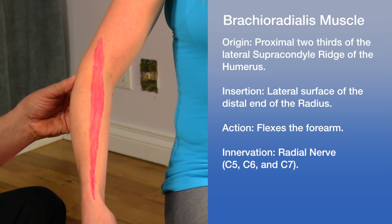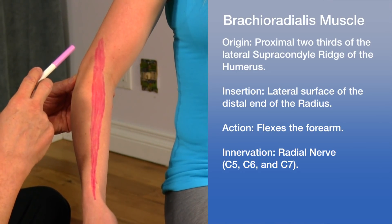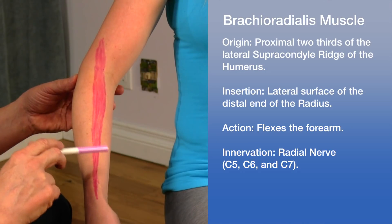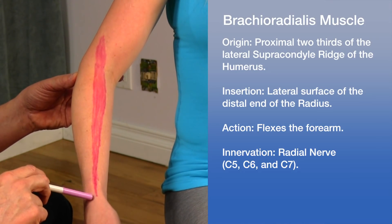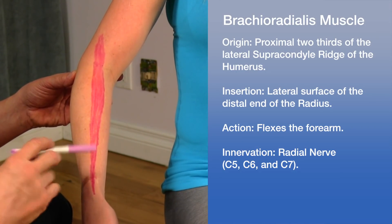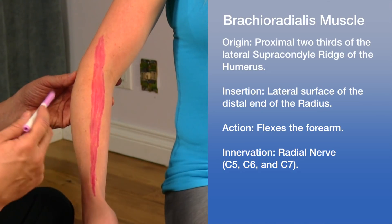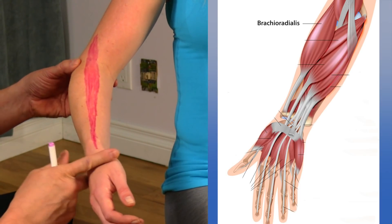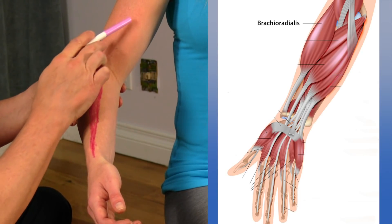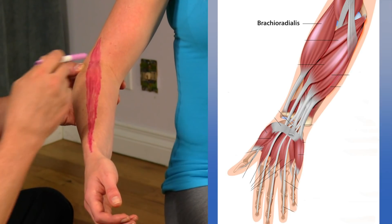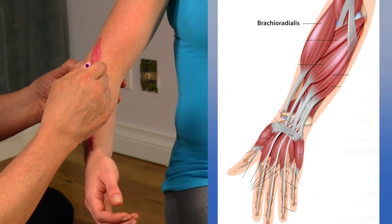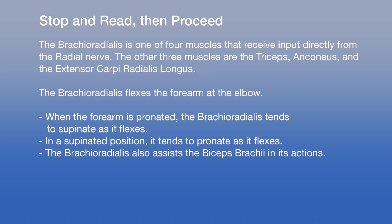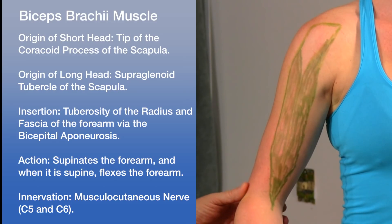The brachioradialis originates on the lateral ridge of the distal humerus and inserts via a long tendon at the base of the radial styloid process. Its action involves bringing the forearm into a mid-position between pronation and supination. Together with the brachialis, the brachioradialis forms the lateral border of the cubital fossa.